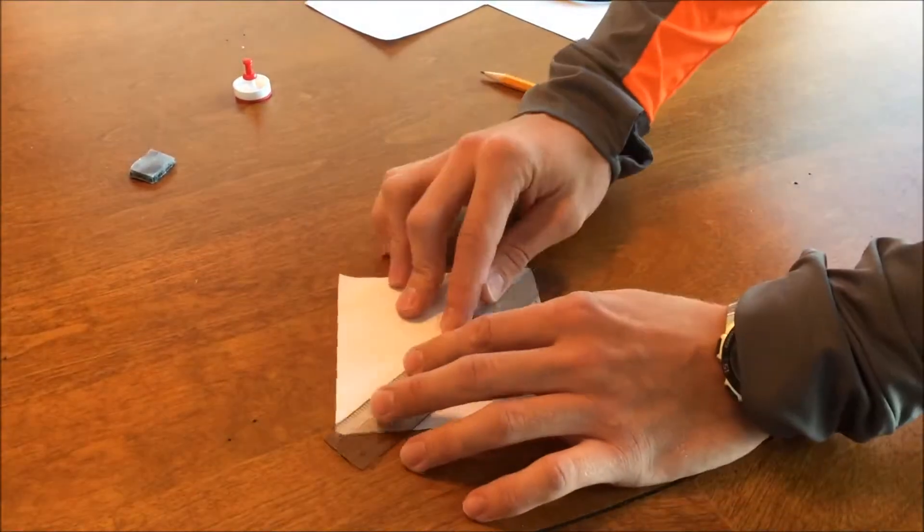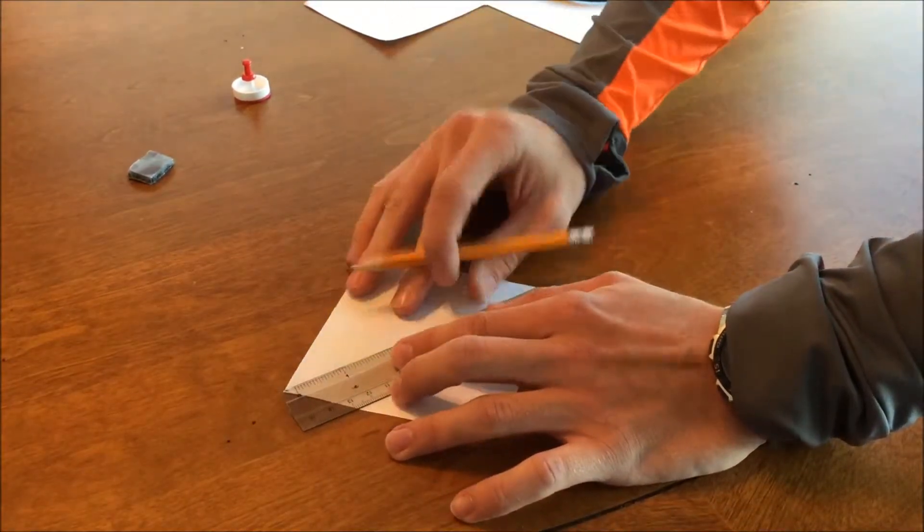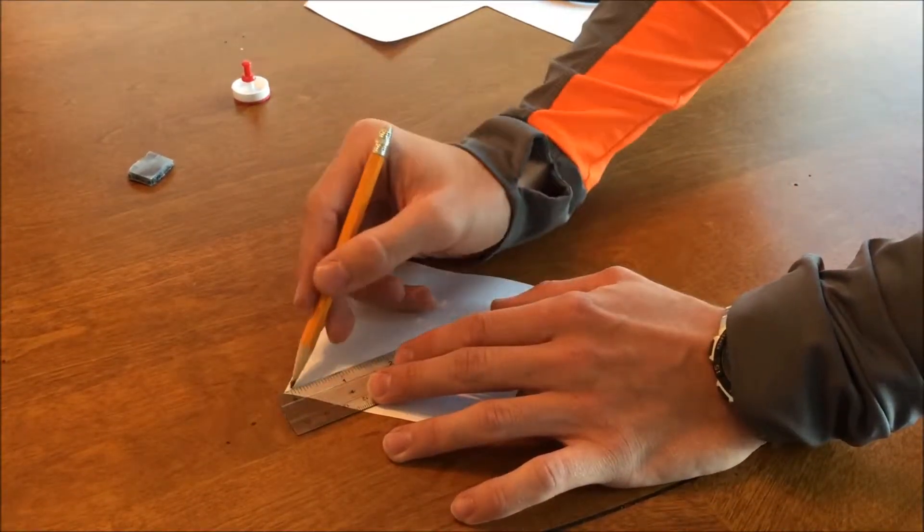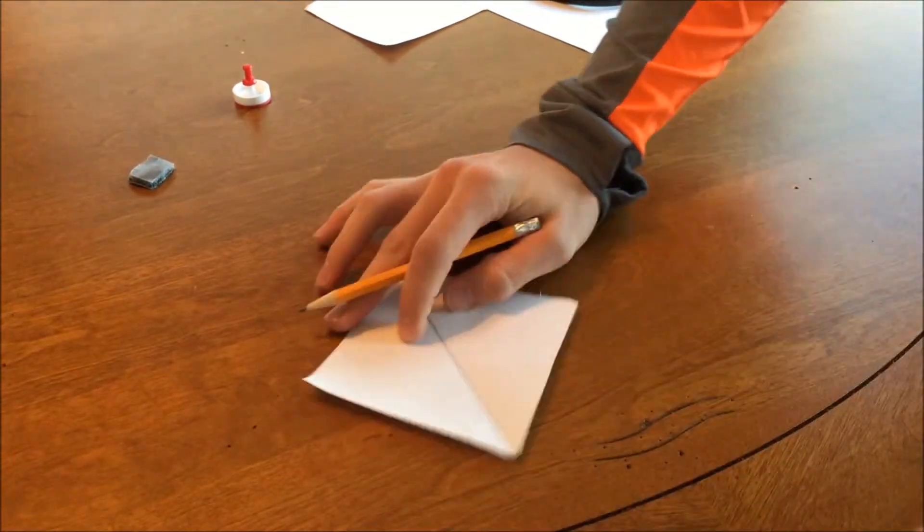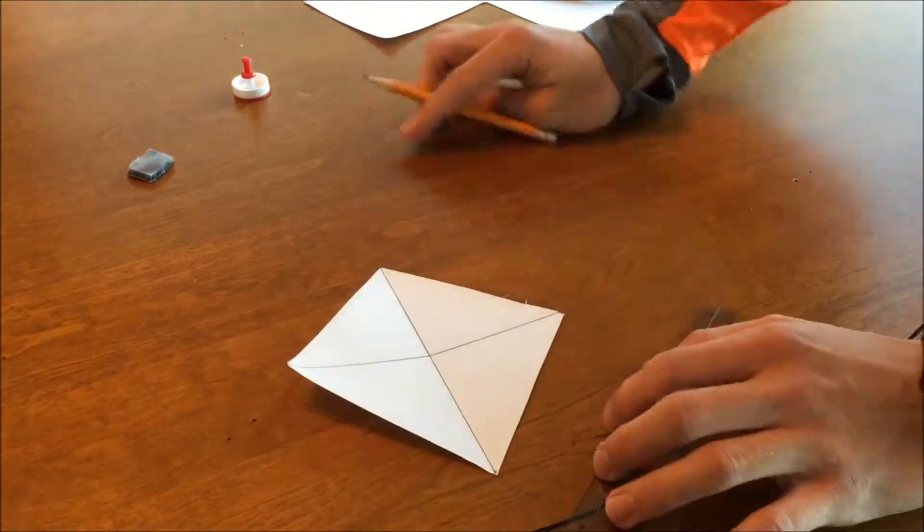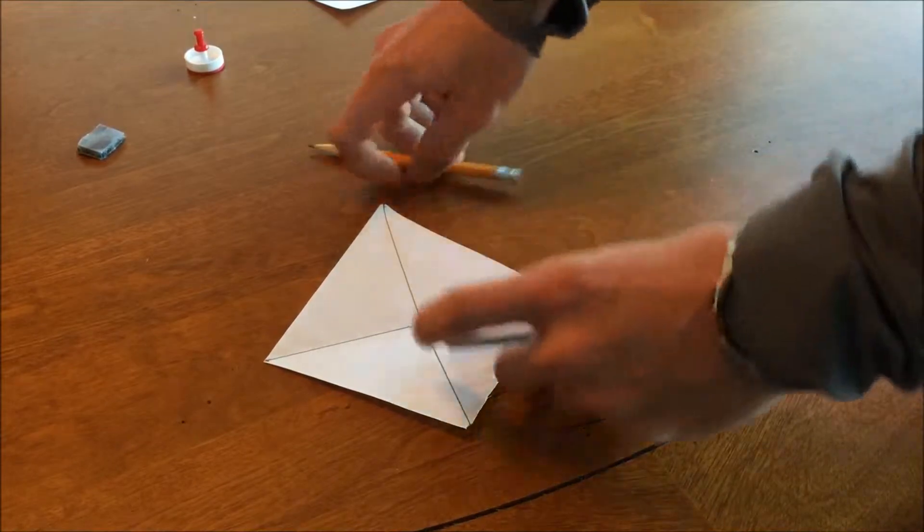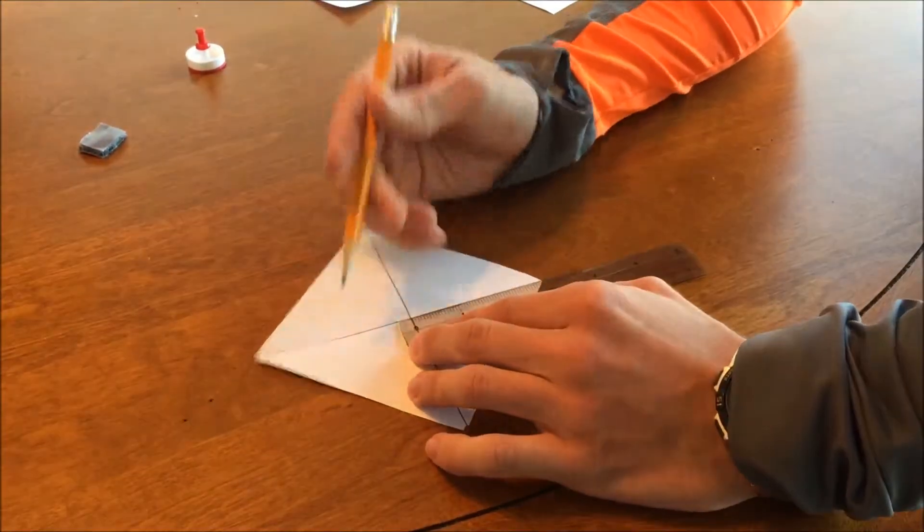With the 4 inch square piece of paper, draw lines that go from corner to corner using the ruler and pencil. Next, mark a dash on each of the lines 1 inch from the center.